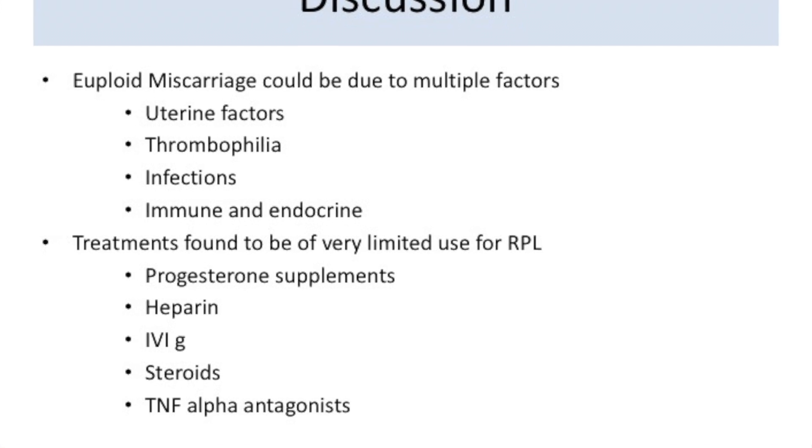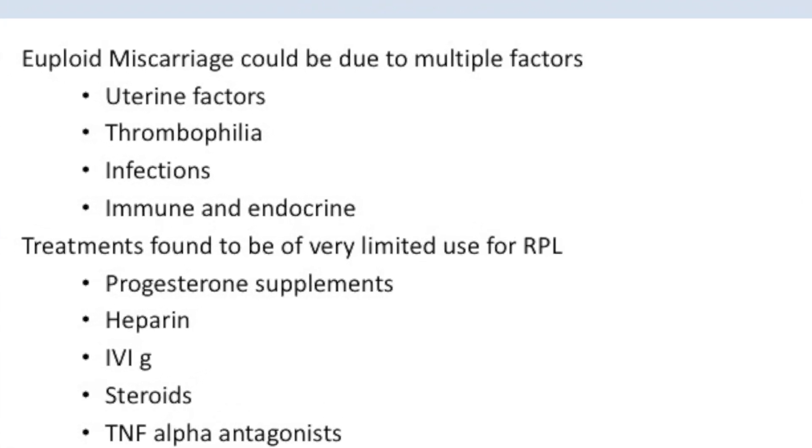The morphology on assessment was very similar for recurrent pregnancy loss and non-recurrent. It also seems that primary recurrent pregnancy loss had morphologically slightly more normal looking embryos. This paper tells us that aneuploidies do form a large part of the miscarriages that occur. Euploid pregnancies also miscarry, and that could be due to various factors — uterine, thrombophilia, infection, or immune and endocrine causes.